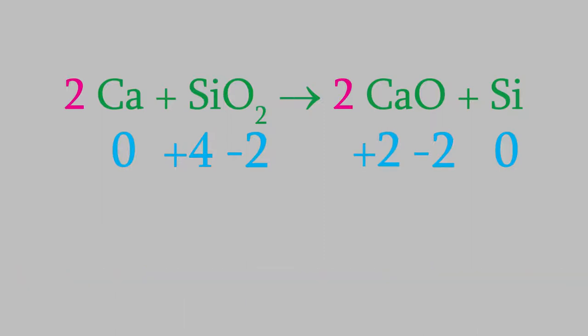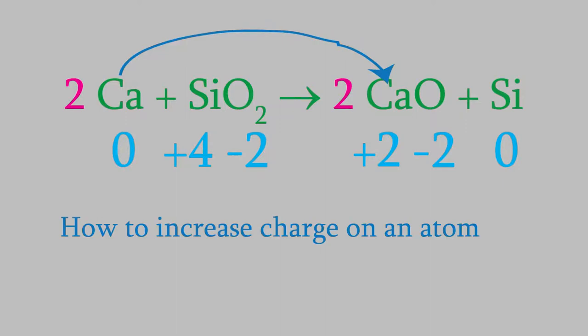But notice what happened in this reaction. The oxygen atoms in the reactants had a charge of minus 2, and they still had a charge of minus 2 in the products. But the calcium and silicon had their charges change. The calcium's charge increased from zero to plus 2, and the silicon went down from plus 4 to zero. Let's think about what happened to those atoms on a really basic level. The charge on the calcium went up. There's only two ways for that to happen.